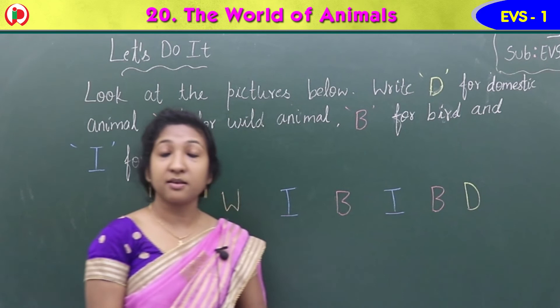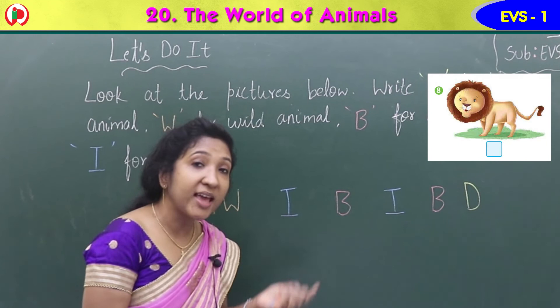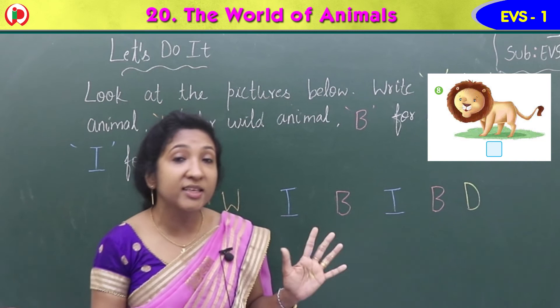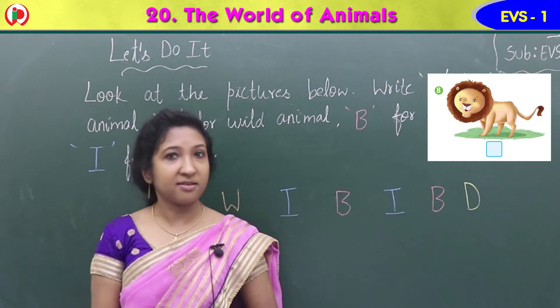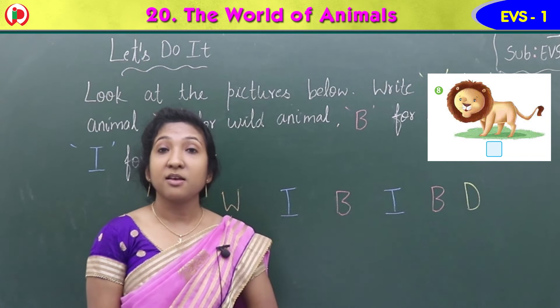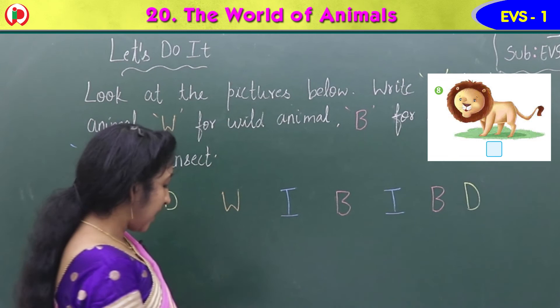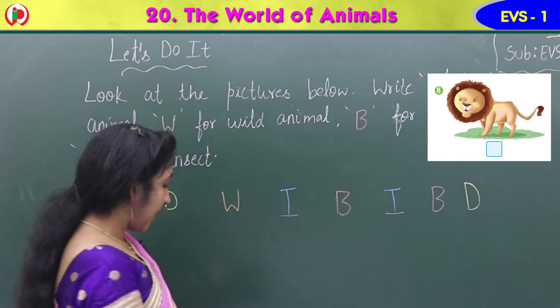Next, the last image — which image can you see here? It is a lion, the king of the jungle, the king of the forest. Lion lives in the forest, so it is a wild animal. We have to write W.